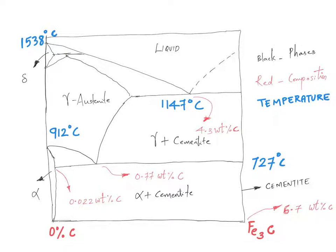In this particular diagram I have used legends like this: black color will represent the phases present and the red color will tell you about the composition. This blue dark color is used to show you the temperature. Now this particular line corresponds to 6.7 weight percentage of carbon. We are not plotting it up to 100 percentage.